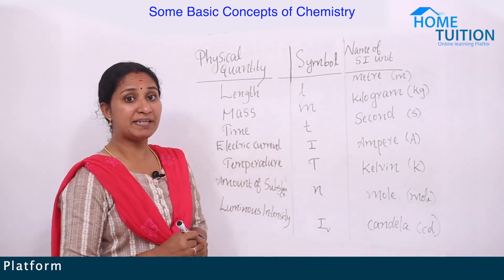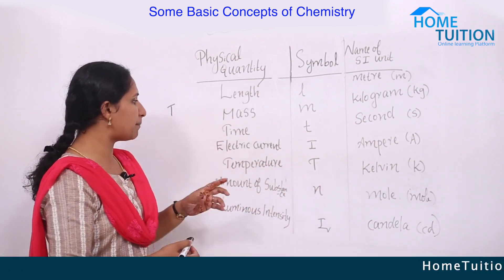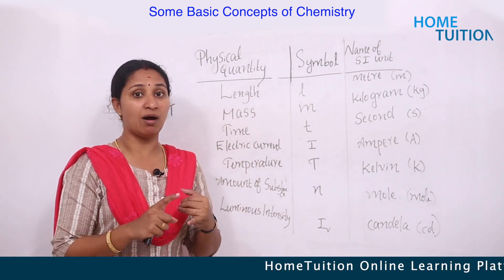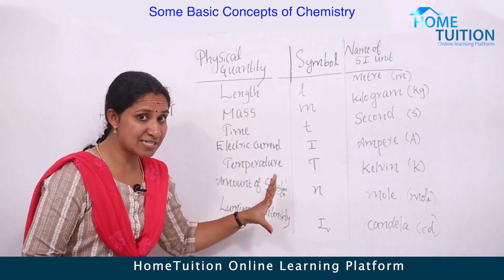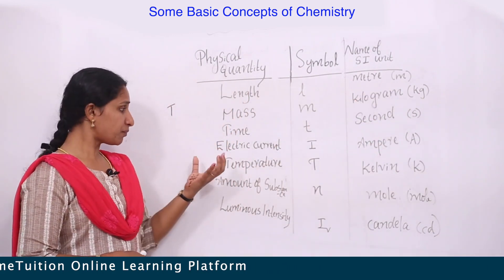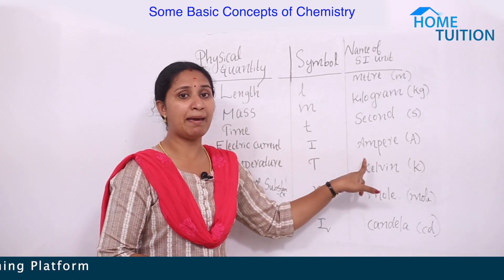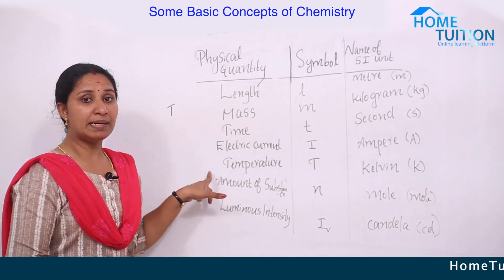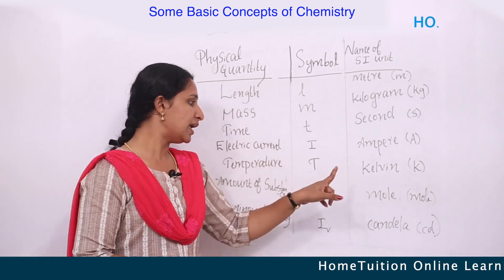Time is represented by small letter 't' and its SI unit is the second. Electric current is represented by 'I' and its unit is the ampere (A). Temperature is represented by capital 'T' — note that time uses small 't' — and its SI unit is the kelvin (K).